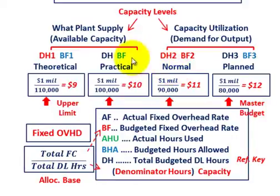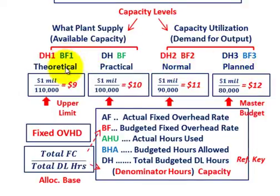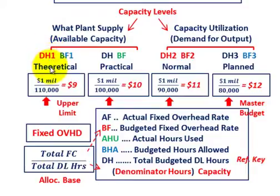We've divided these different capacity levels into two categories: what the plant can supply — that's the available capacity, based on either the theoretical or practical amount — and capacity based on utilization, meaning the demand for output, which would be either the normal amount or the planned amount. When we do these divisions — total fixed cost divided by the denominator hours (direct labor hours) — you come up with a rate, and you'll have a different denominator for each choice.